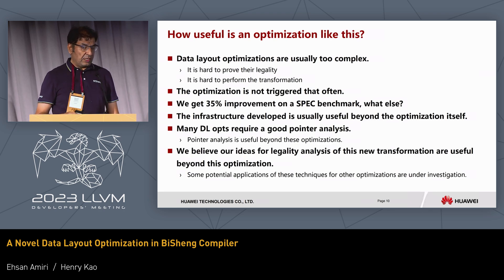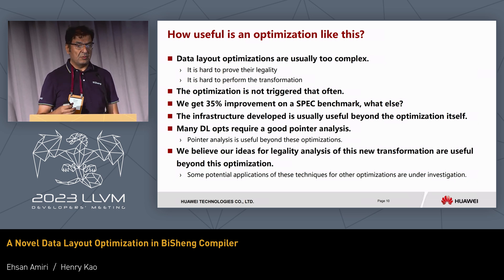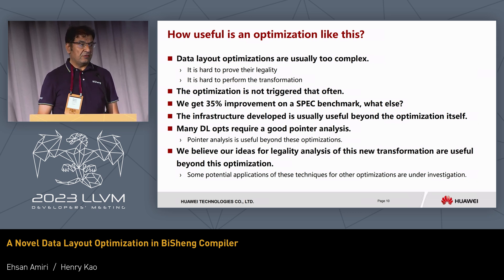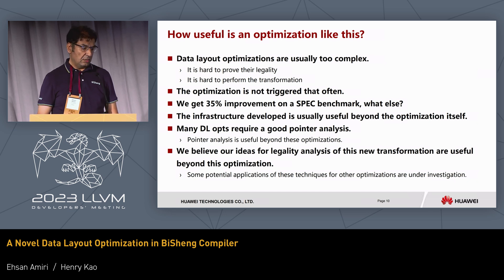An optimization like this is difficult to implement and time-consuming. We do get a 35% improvement on a SPEC benchmark, which is useful. But one question is whether there is any benefit beyond that. My answer is that there is: the infrastructure we develop for this optimization. Standard data layout optimizations usually require a good pointer analysis, and that pointer analysis is useful for purposes beyond the specific optimization. I believe the ideas developed for this optimization could be useful in more general cases, and we are currently investigating applications of these ideas in other C++ workloads. Thank you.